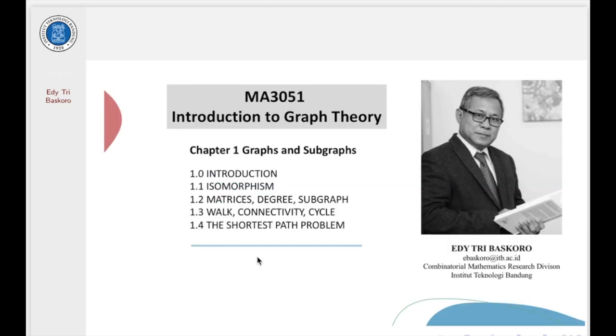Now we are entered to the first chapter, graph and sub-graph. This chapter will consist of five sections: start by introduction, isomorphism, and then matrices, degree and sub-graph. Then we talk about walk, connectivity, and cycle. And the last one, we will discuss about the application, one of the application of graph. This is on shortest path problems.